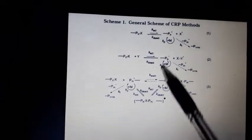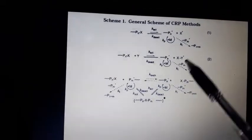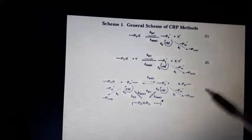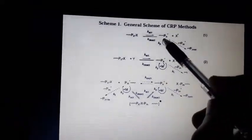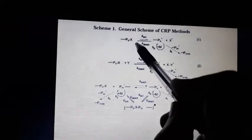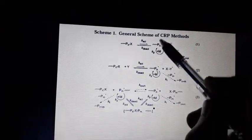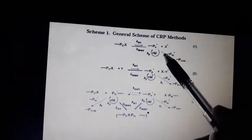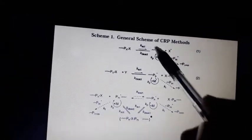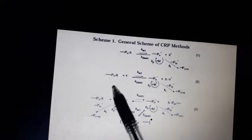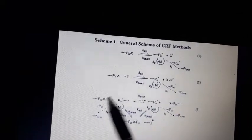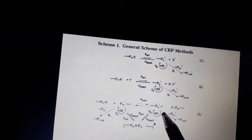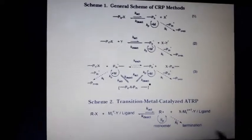This is the general scheme of controlled radical polymerization showing different kinds. The first one is atom transfer radical polymerization, in which we have a dormant polymer chain and active polymer chain produced, more monomers are added, and we have a propagation rate constant. Termination occurs when two growing radicals combine together. The other mechanisms shown are RAFT and nitroxide-mediated polymerization, but for now we are focusing on atom transfer radical polymerization.